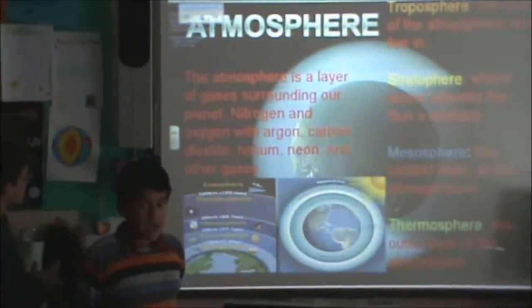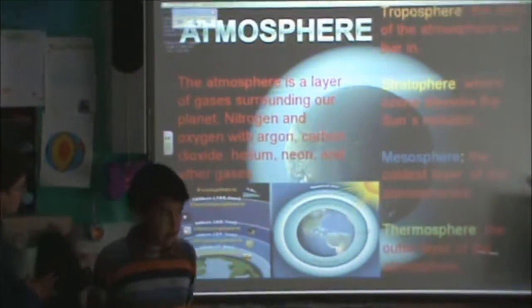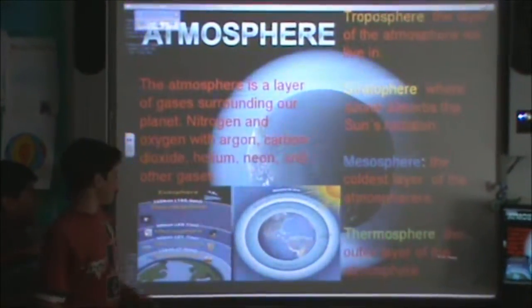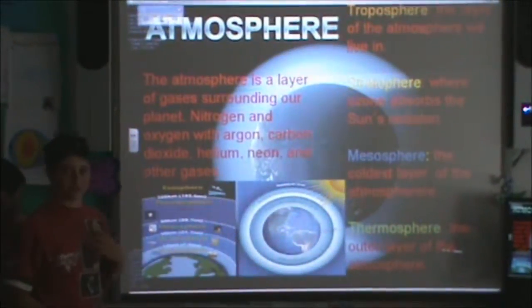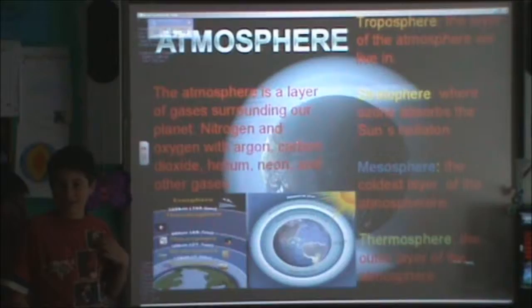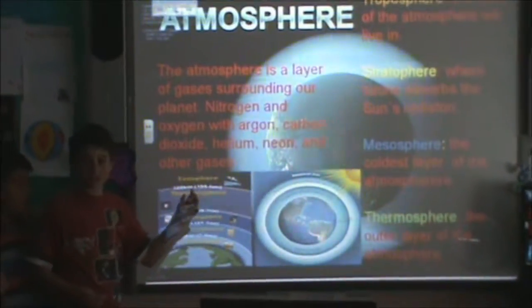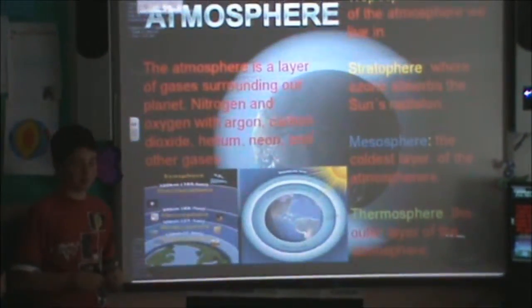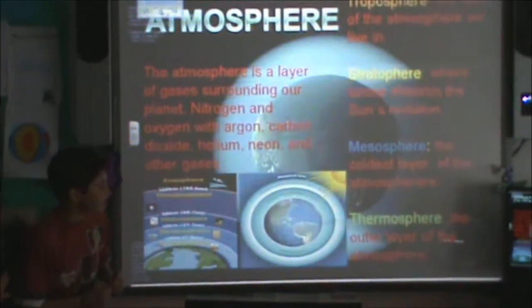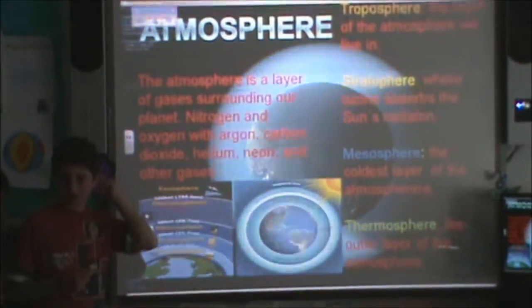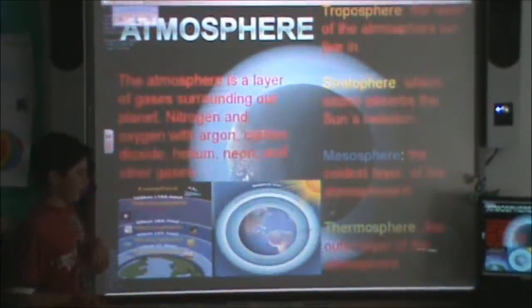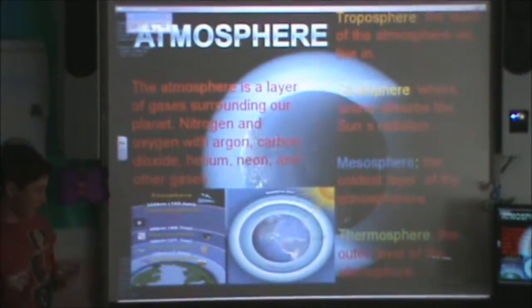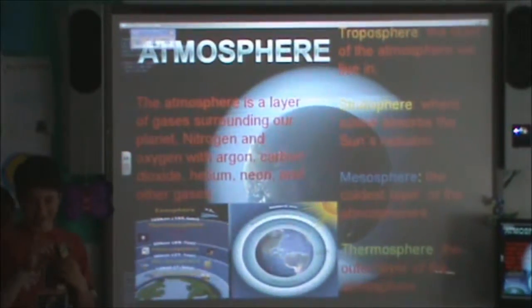Carbon dioxide, helium, and neon are among other gases. The troposphere is the lowest layer. The stratosphere is where the ozone absorbs the sun's rays. The mesosphere is the coldest layer of the atmosphere, and the thermosphere is the outer part of the atmosphere.